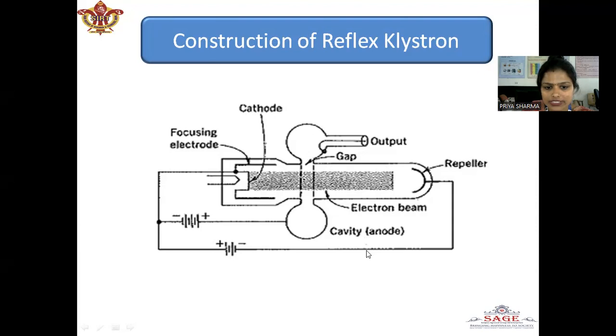The time taken by electrons to travel from here to the repeller space and back to this cavity is known as the transit time, must be of optimum value. This factor is not as important in a klystron amplifier but it assumes great importance over here.